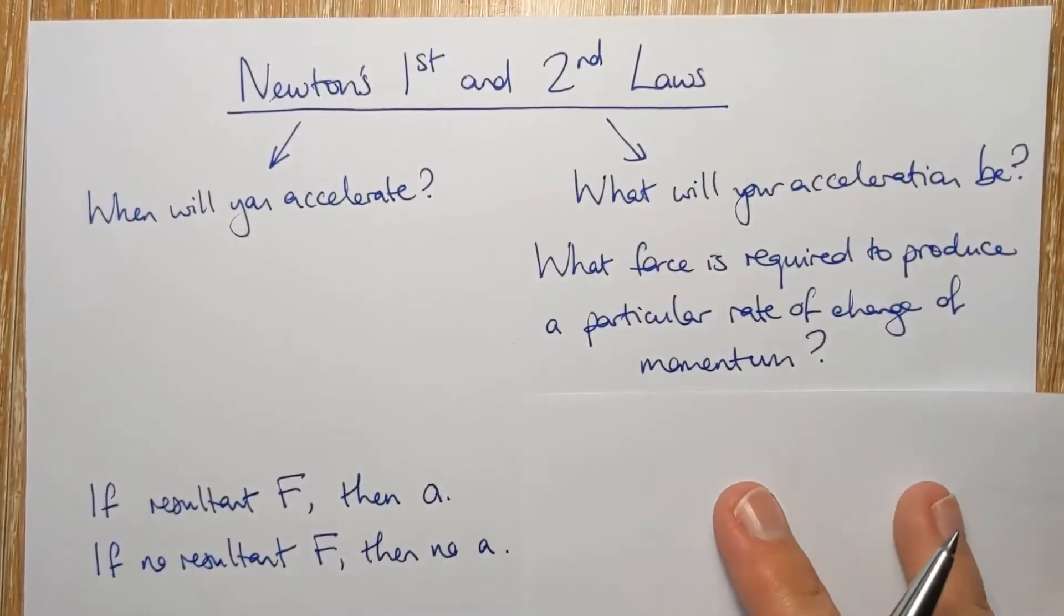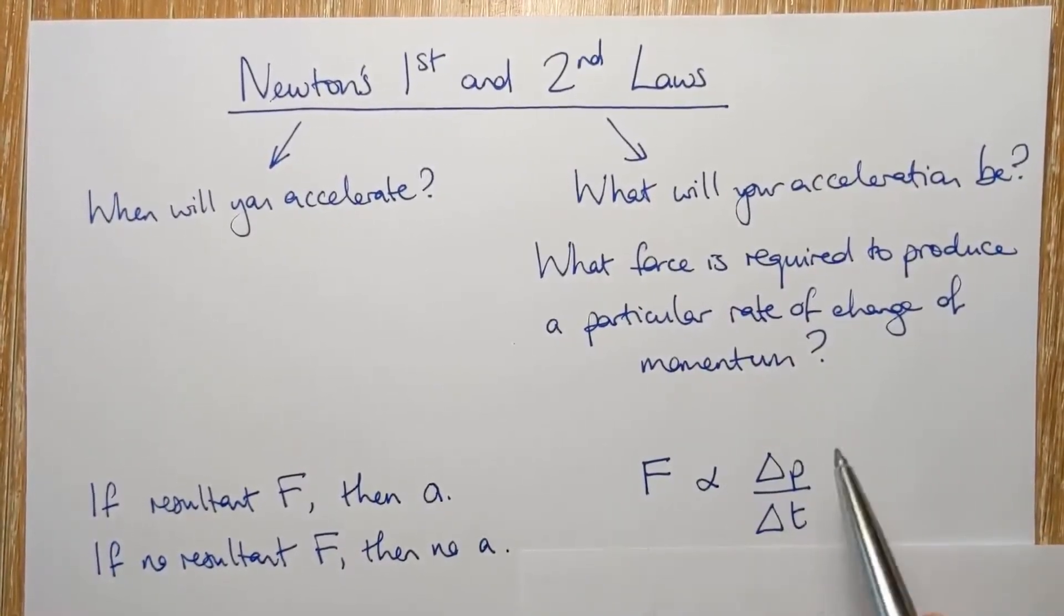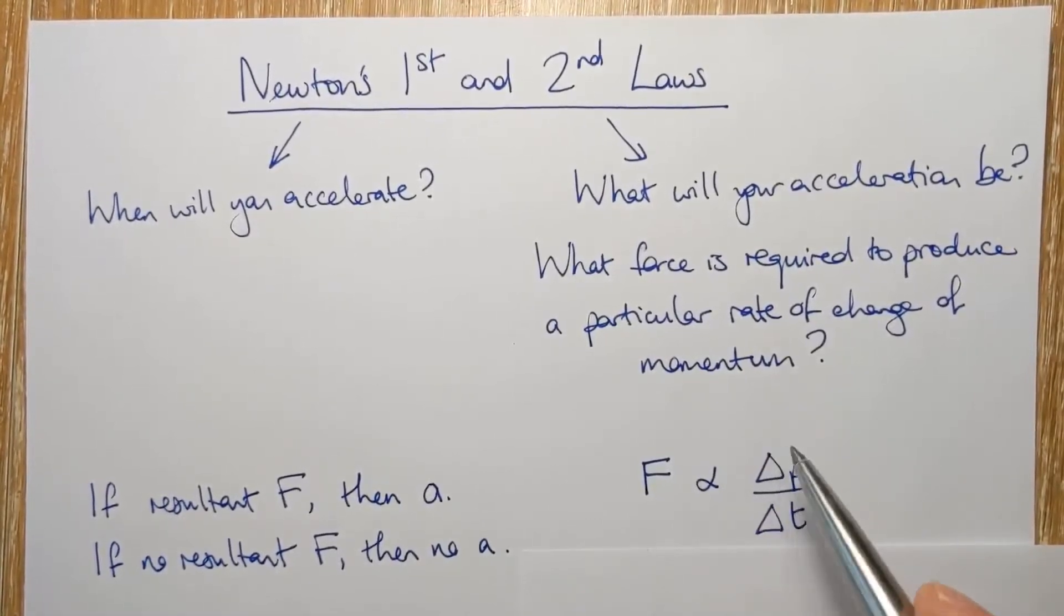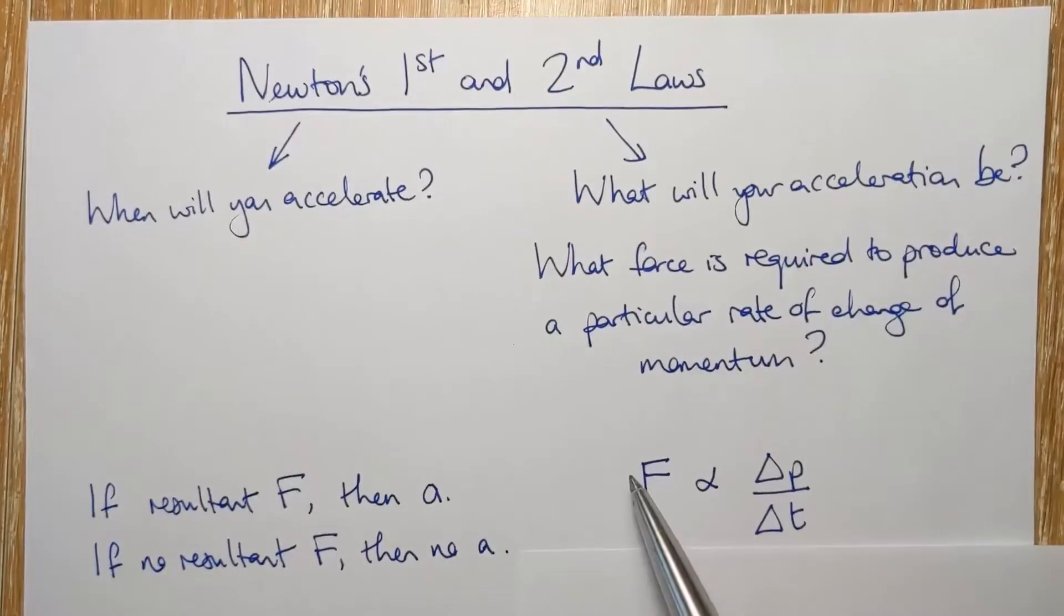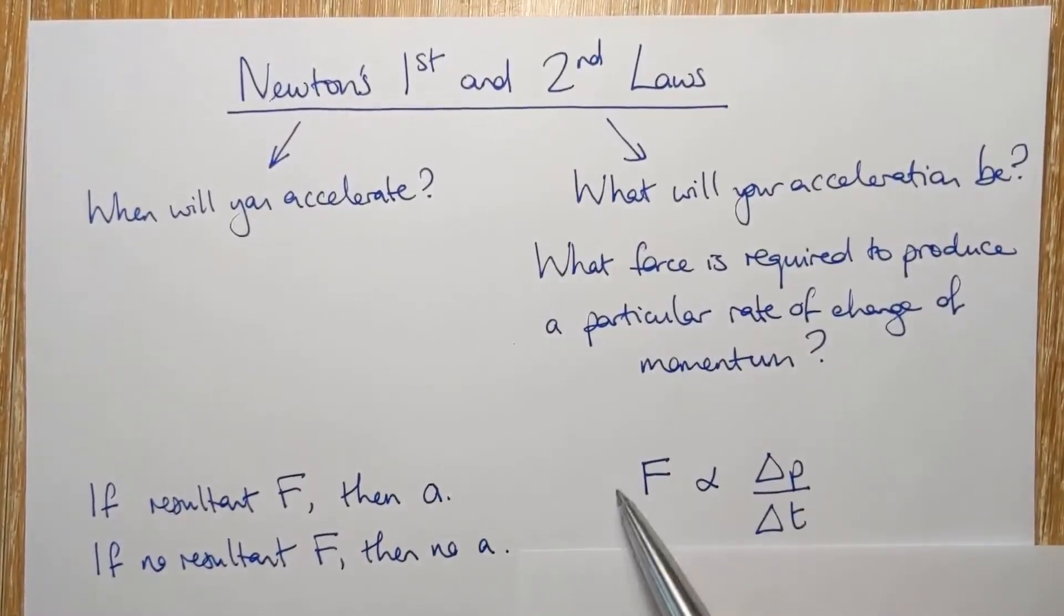The second law tells us that when you have a resultant force on you, then the rate of change of momentum that it causes is directly proportional to the force. So if you want to double the rate of change of momentum, you need to double the size of the resultant force. And that is Newton's second law.